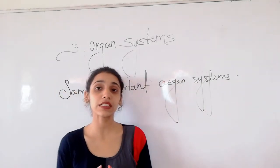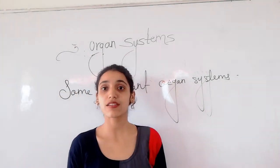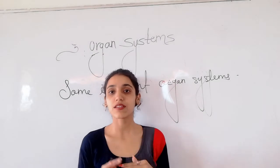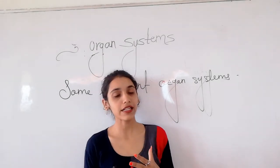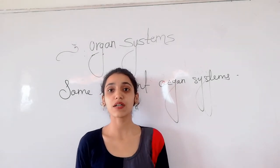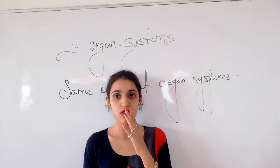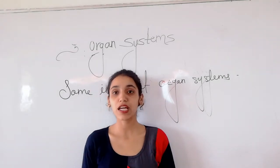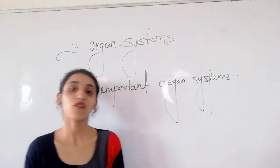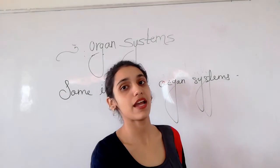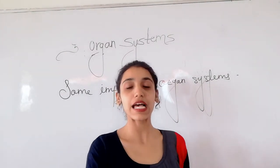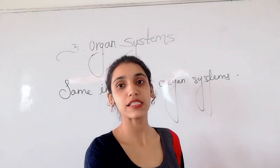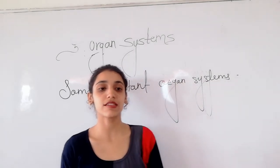The digestive system consists of the mouth, food pipe, stomach, and intestine. The respiratory system consists of the nose, windpipe, and lungs. And the circulatory system consists of the heart and blood vessels. These are the important organs of each and every system.